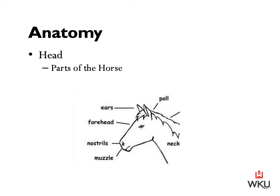So getting started with the head of our horse, we have our poll — this is the top of the head, center of the ears. Then we have the horse's ears, their forehead, their nostrils, and their muzzle. Those are the different parts of the horse's head. One that's not identified here but is good to know is the throat latch — between our neck and our head where they join is going to be our horse's throat latch.